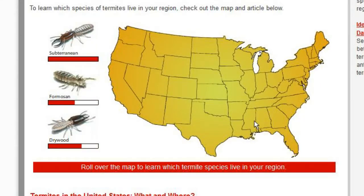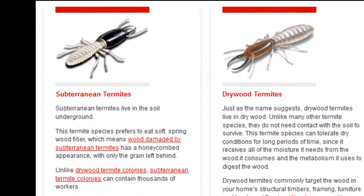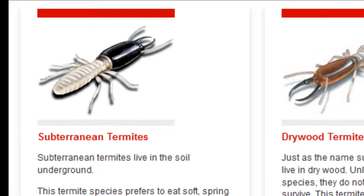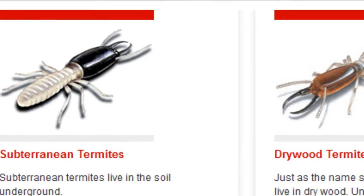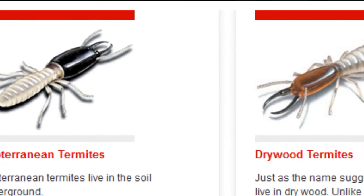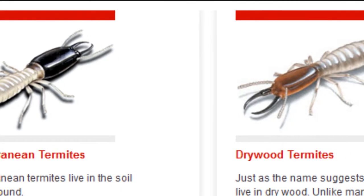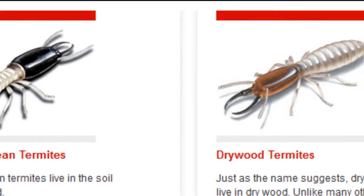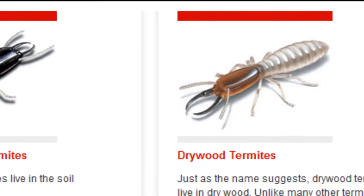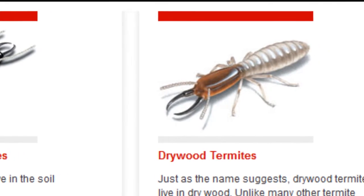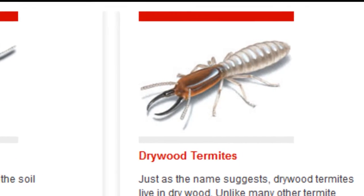Generally speaking, 90% of the termite damage in the United States is caused by subterranean termites. They are found practically all over the United States, are active all year around, and as the name implies, they live underground.